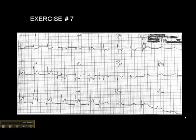Now we're on page 45. This is exercise number 7, and the writing on the ECG is a little bit of a giveaway because you can see that the person who did this electrocardiogram did right-sided precordial leads: RV1, RV2, RV3, RV4, RV5, and RV6.